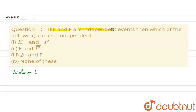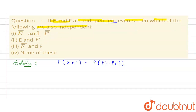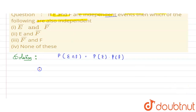In this question, it is given that E and F are independent events. We need to check which of the following options are also independent. There are four options and we need to check each one. E and F are independent events if the probability of E intersection F equals the probability of E multiplied by the probability of F.